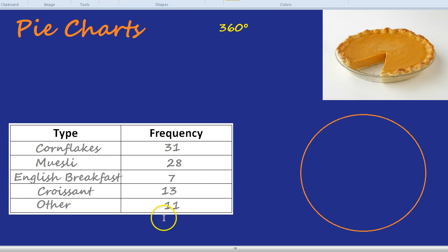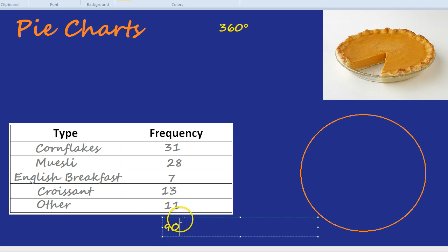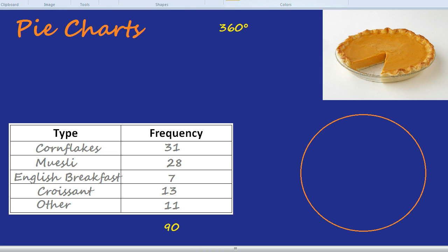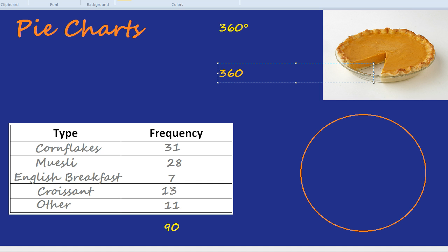So we need to think, how are we going to fit these numbers into 360 degrees? To do that, we need to add them up. 31 plus 28 is 59, plus 7 is 66, plus 13 is 79, plus 11 is 90. And indeed, in most of the questions you're going to get, you're going to get some factor of 360, unless they're being very cruel. But even then, we can still do it. What do we do with that 90 though? What we would do is 360 divided by the total, so in this case 90. Let's write that as a formula.